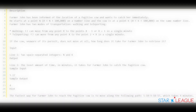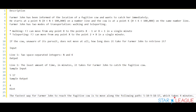In this video, we will go over the programming problem called Catch the Cow. For the description of this problem, Farmer John has been informed of the location of a future cow and wants to catch her immediately. He starts at a point called N from 0 to 100,000 on a number line, and the cow is also at a point called K, also 0 through 100,000 on the same number line.